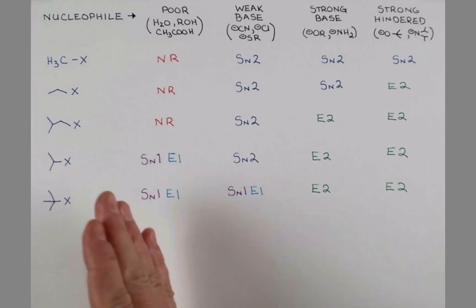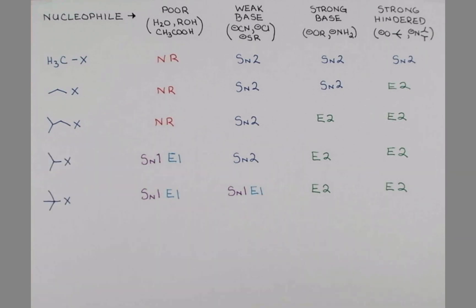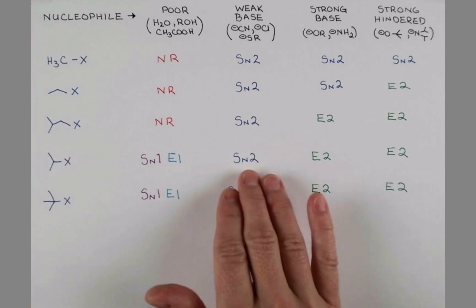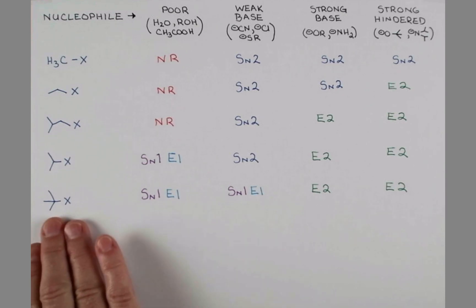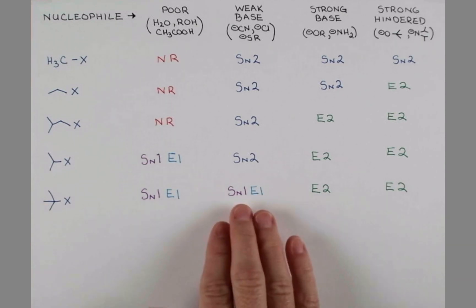Secondary substrates are only about as hindered as this primary branched example, and so they'll undergo SN2 when treated with a weak base. But the tertiary substrate cannot do that. We can't get backside attack. So even under weakly basic conditions, we have the SN1 and E1 mechanisms competing here again.